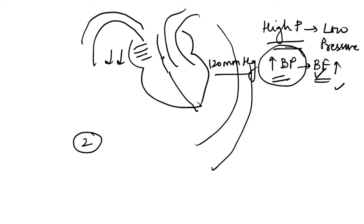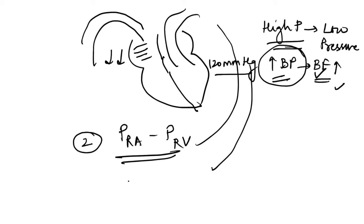For individual tissue beds, blood flow is calculated using the pressure difference between the inlet and outlet vessels. For example, to find the driving force in renal vessels, we take the pressure in the renal artery minus the pressure in the renal veins — that gives the driving pressure in the renal vessels.